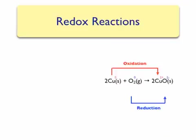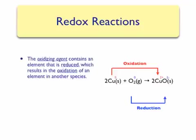There are a few other terms that are helpful in describing a redox reaction. The first is the oxidizing agent. The oxidizing agent contains an element that was reduced, which results in the oxidation of an element in another species. In our example reaction, oxygen is the oxidizing agent. It goes from having a zero to having a minus two charge, indicating that it picked up electrons from another source — the copper.